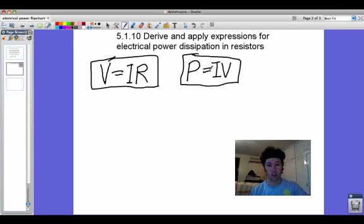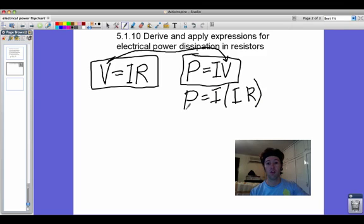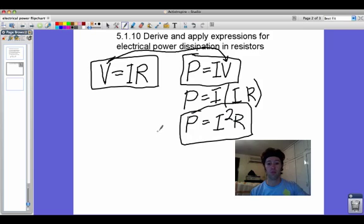For example, let's say that we want to substitute in for voltage into our power equation here. So we've got power equals the current and we fill in for V that's equal to IR. So then another important power equation that we get is P equals I squared R. Nice to memorize.